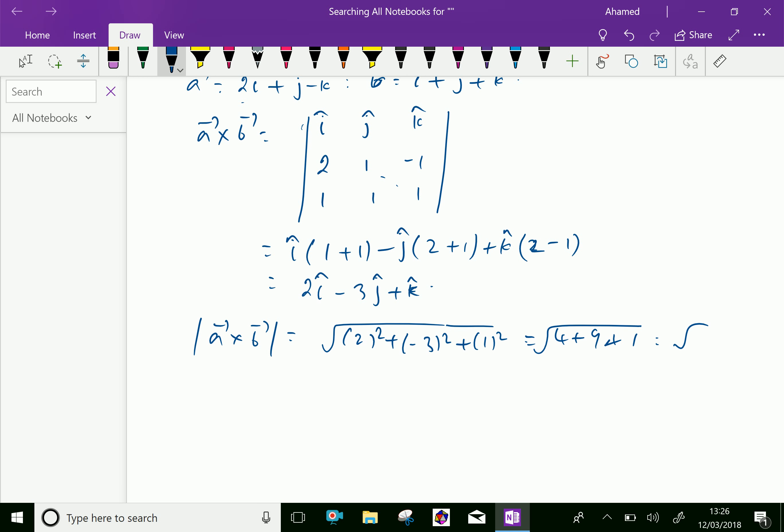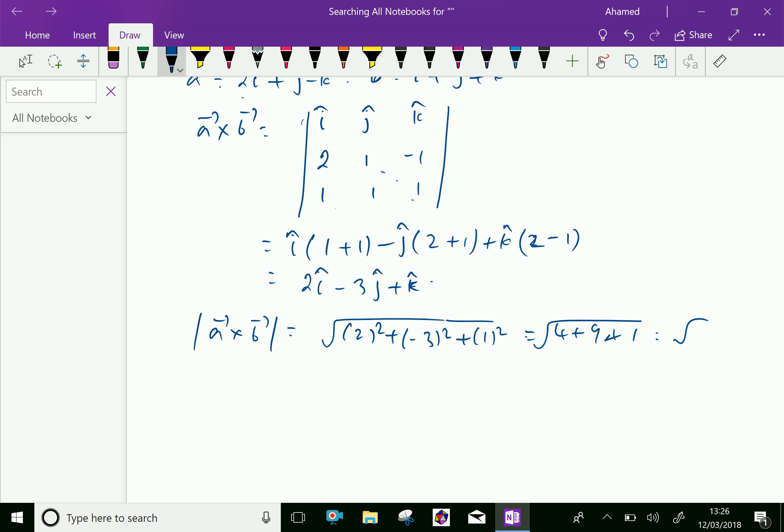Let me check one more time. i is 1 into 1 is 1 and 1 minus 1 is 1, that is plus 1. j is 2 into 1 and 1. k is 2 into 1, 1 and 1. So 2, 3, k. Therefore 14, square root of 14.